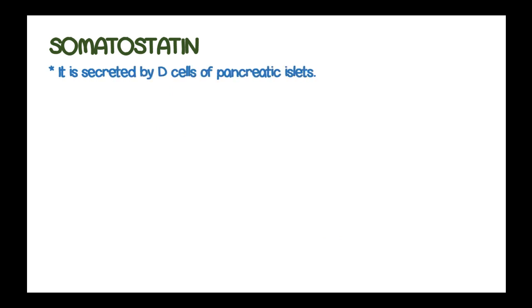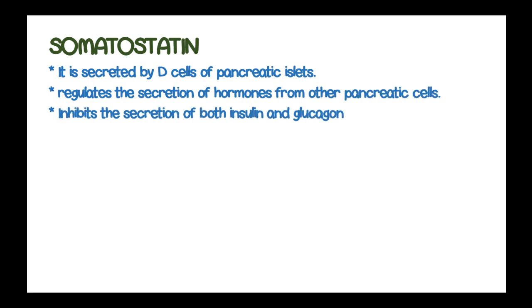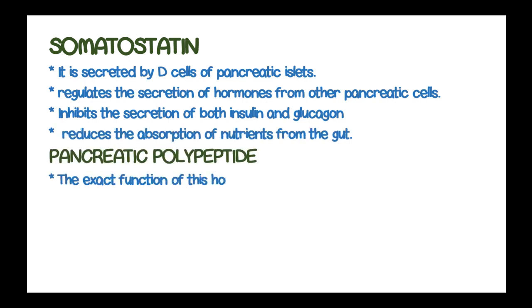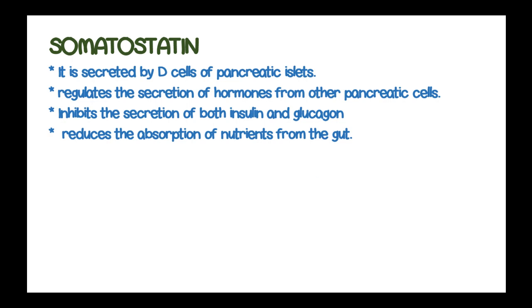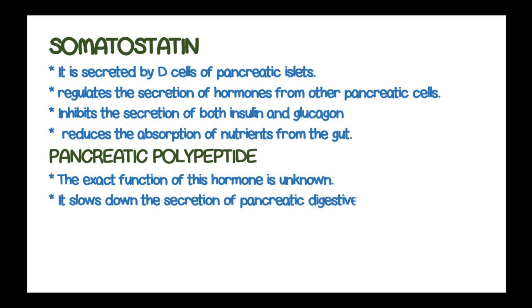Somatostatin is secreted by the delta cells of the pancreatic islets, and it regulates the secretion of other hormones from the pancreatic cells. It inhibits the secretion of both insulin and glucagon, so it is an inhibitory hormone, and reduces the absorption of nutrients from the gut. Pancreatic polypeptide is secreted by the F cells, and while its function is not exactly understood, it slows down the secretion of pancreatic digestive enzymes and absorption of foods in human beings.